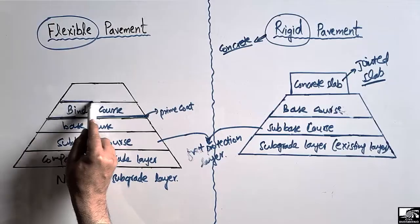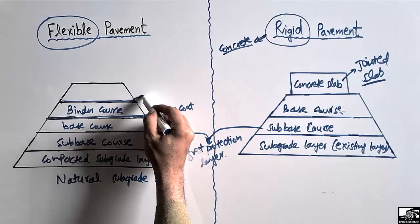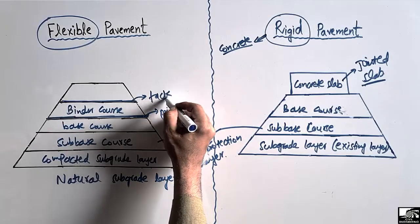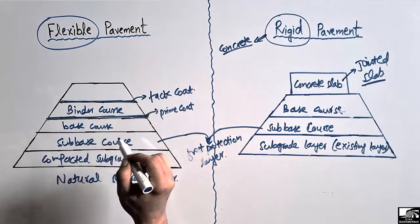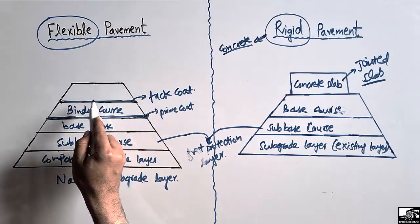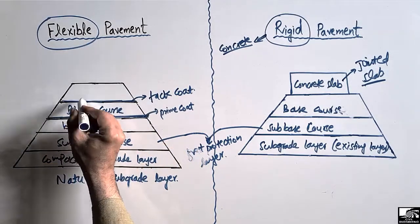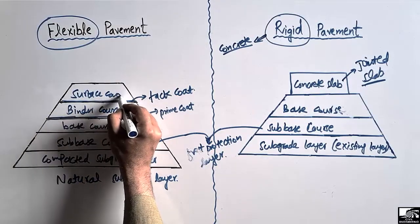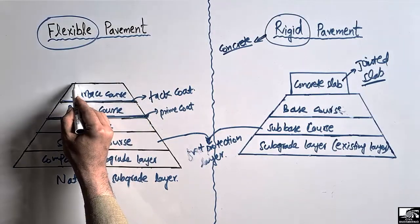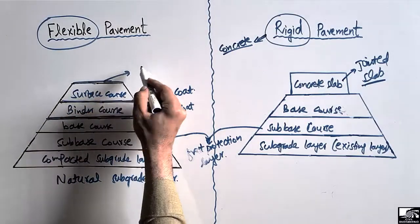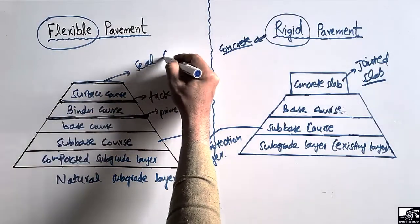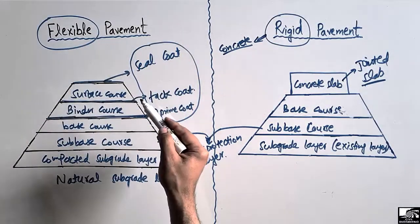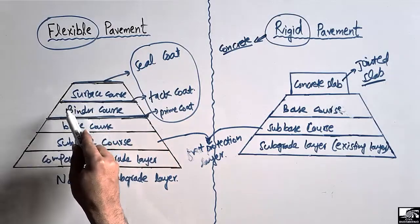In the case of flexible pavement, on top of the binder course we provide another type of coating known as the tack coat. On top of the tack coat we provide the top surface, known as the surface course. On top of the surface course we provide another coating known as the seal coat. These three types of coatings prevent the penetration of rainwater into the lower layers.